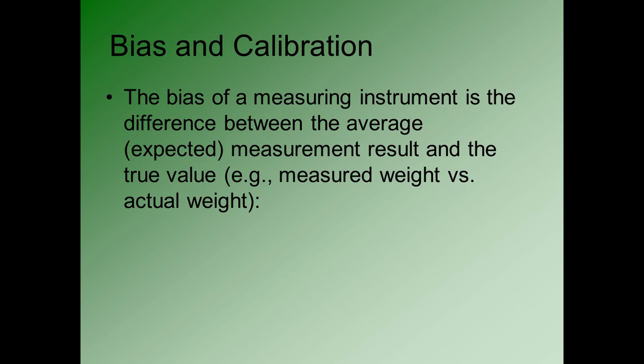The notion of bias is whether your measuring instrument is essentially off on average. The bias of a measuring instrument is the difference between the average or expected measurement result and the true value. For example, it's the difference between the average measured weight of an object and its actual weight — average measured minus the true.